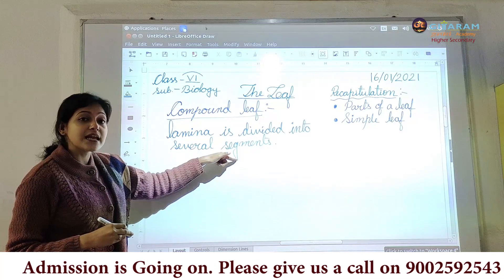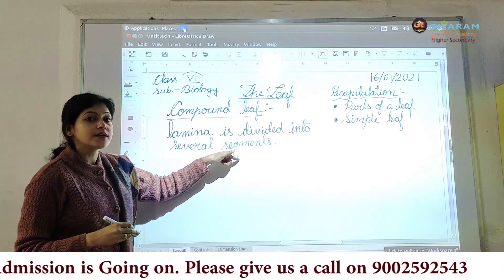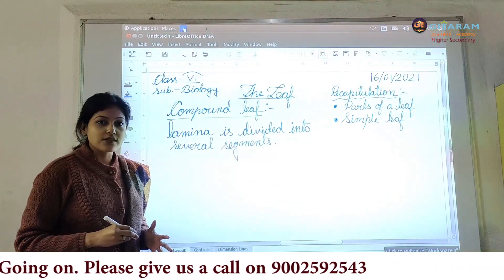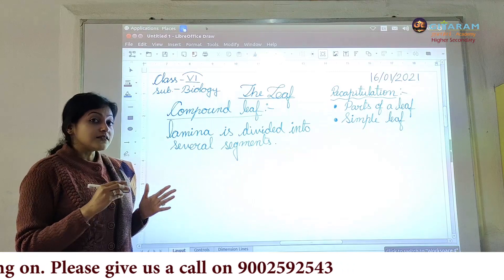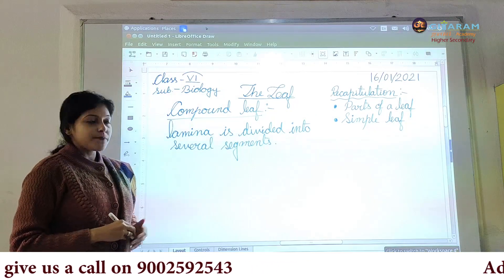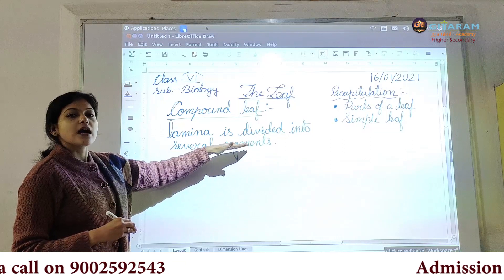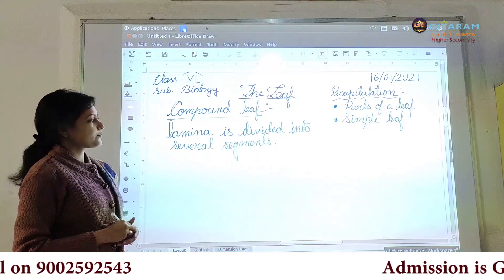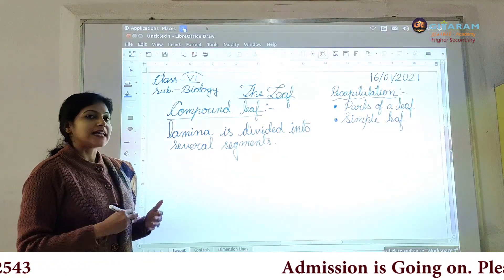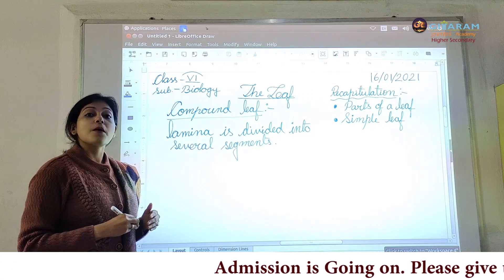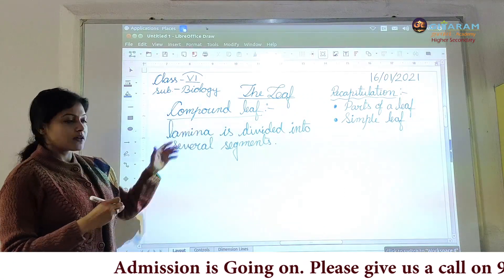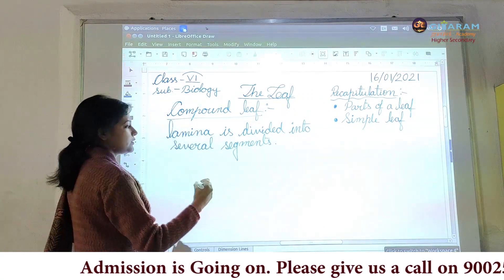And how are the segments formed? Definitely due to incisions. As incisions reach up to the mid-rib, as a result these segments are formed. Now let us see — if we draw a diagram of a simple leaf, we can see how a compound leaf is formed from it.